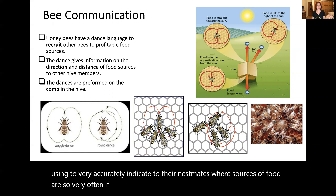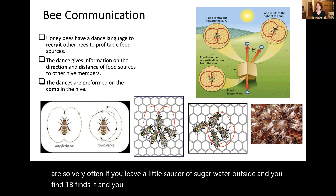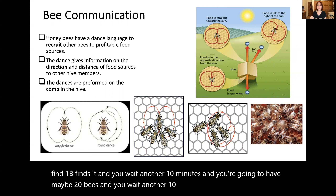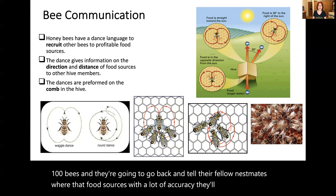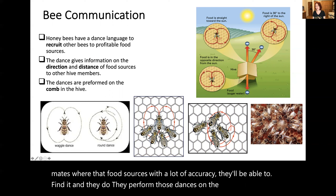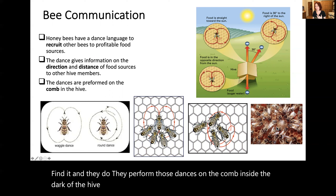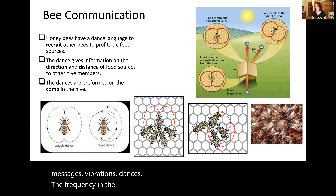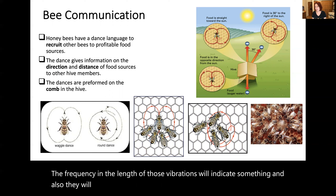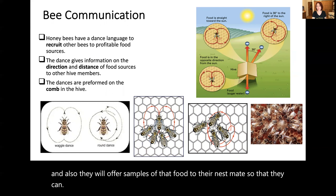So it's a very complex language that they use to very accurately indicate to their nest mates where sources of food are. Very often, if you leave a little saucer of sugar water outside and one bee finds it, you wait another 10 minutes and you're going to have maybe 20 bees, then wait another 10 minutes and you'll have 100 bees. They go back and tell their fellow nest mates where that food source is with a lot of accuracy. They perform those dances on the comb inside the dark of the hive, using chemical pheromones, chemical messages, vibrations, dances, and the frequency and length of those vibrations to indicate information. They will also offer samples of that food to their nest mates so they know what they're looking for.